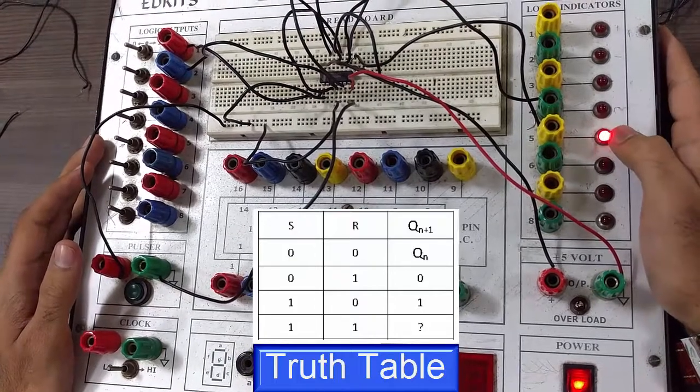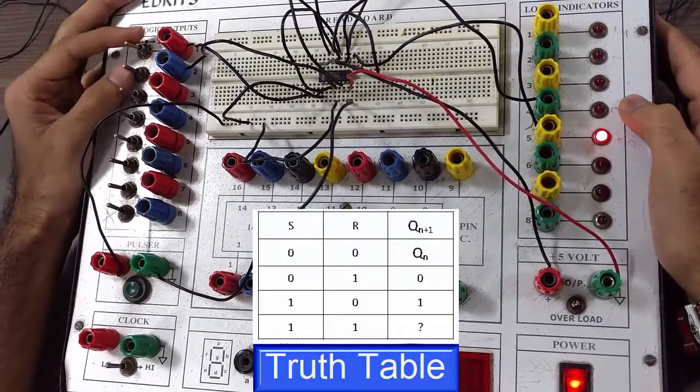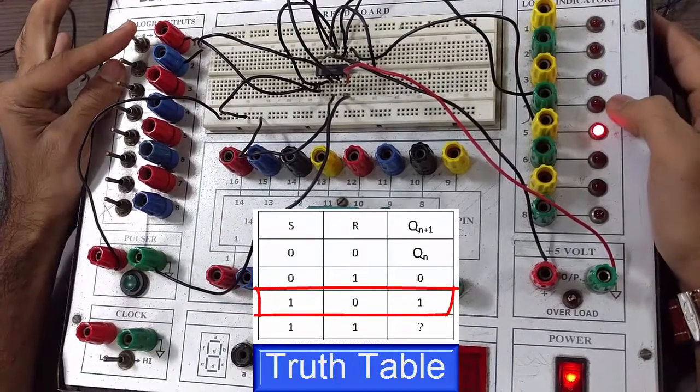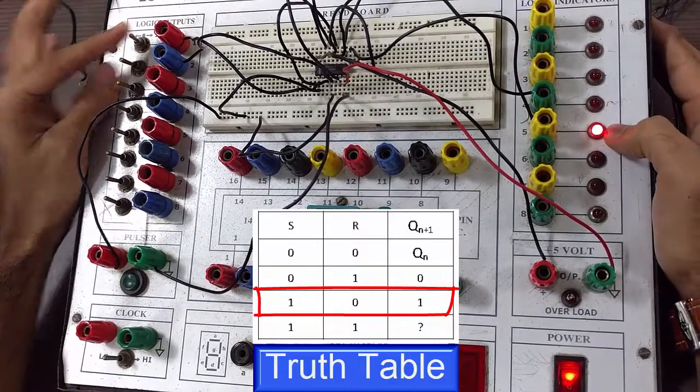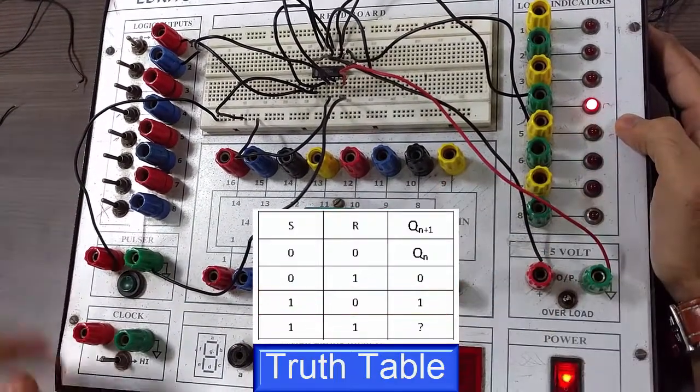Now we can see that in the previous state Q bar is on and Qn is 0. Now we have made S input as 1. We should get Qn as 1 and Qn bar as 0. We will give the clock now. As you can see now Qn is 1 and Qn bar is 0.